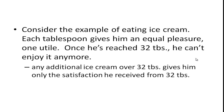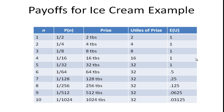A good example is eating ice cream. Each tablespoon gives that person equal pleasure — one util. Once this person has reached 32 tablespoons, which is quite a bit of ice cream, they can't enjoy it anymore. Any additional ice cream over 32 tablespoons gives only the same satisfaction as 32 tablespoons. We're not assuming it makes them sick — they can always throw the ice cream away. So we have the same probabilities and payoffs, but the utils of the prize stop increasing after 32 tablespoons.